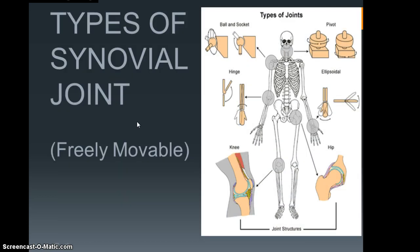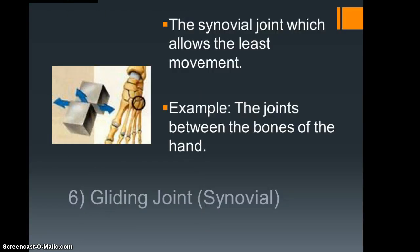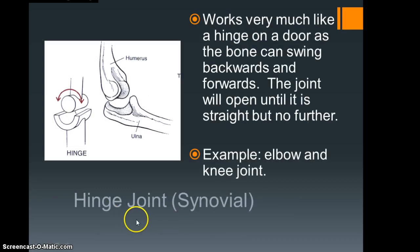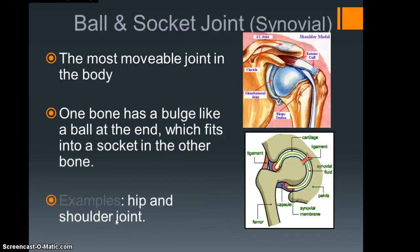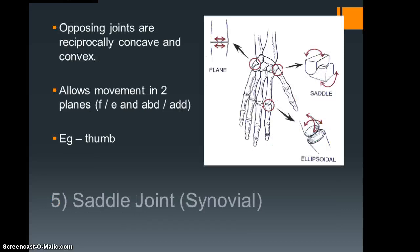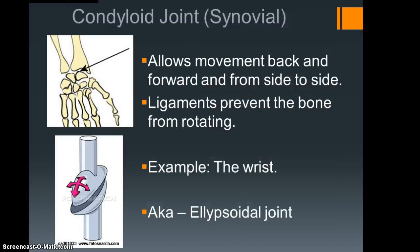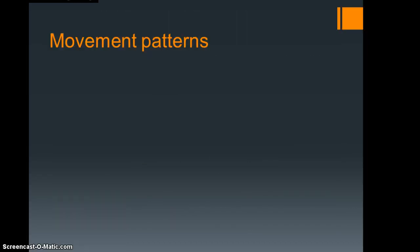We're going to look at the types of synovial joints very quickly, because again we have that element of assumed knowledge, but you can pause it as I mentioned before whenever you need. So there is the gliding joint, the hinge joint, pivot, ball and socket, saddle joint, condyloid, and that's your lot.